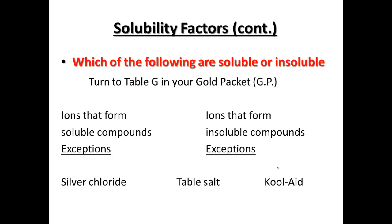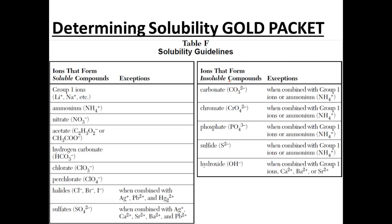In our gold packet, and a reference page you'll be getting later on also, is going to show us some of our tricks with soluble versus insoluble. Ionic solutions and compounds, we're going to look at like silver chloride, table salt NaCl, and then Kool-Aid is mostly a glucose or sugar. We're going to see that silver chloride is going to be insoluble. From our gold packet, you'll have this list.